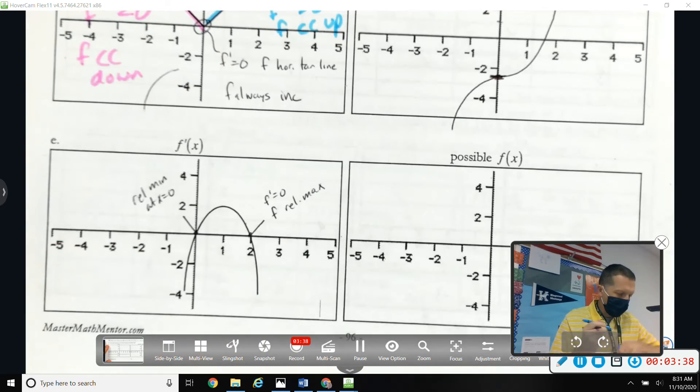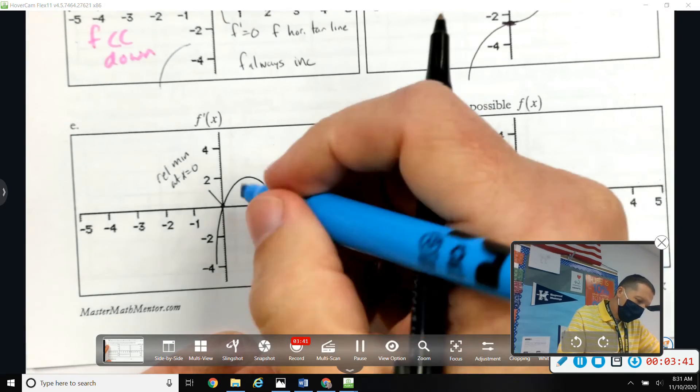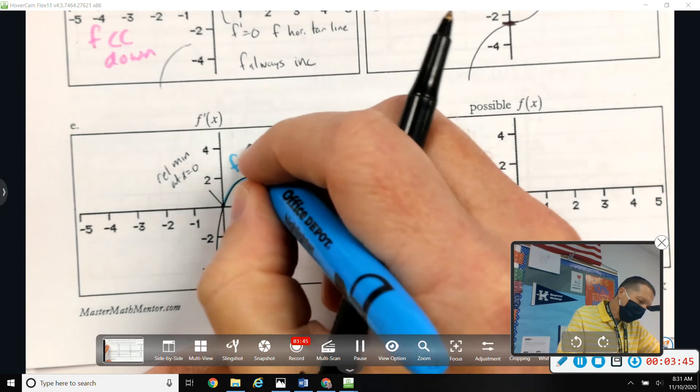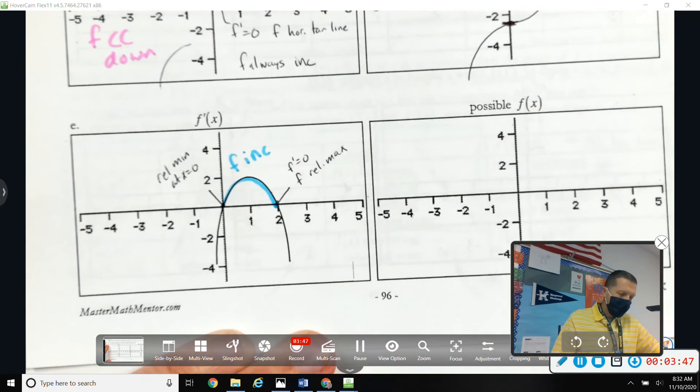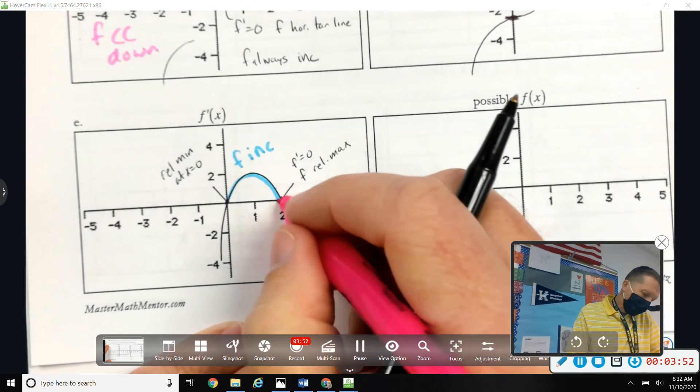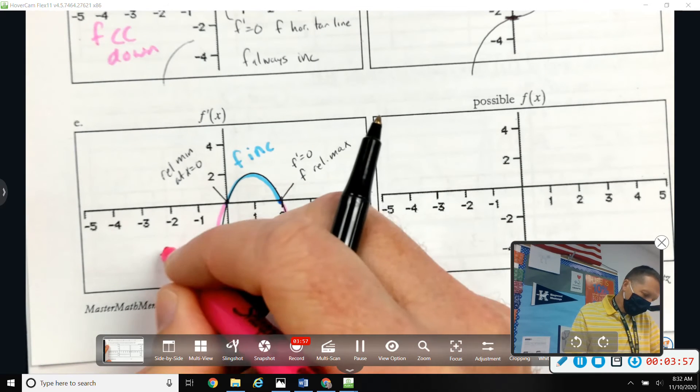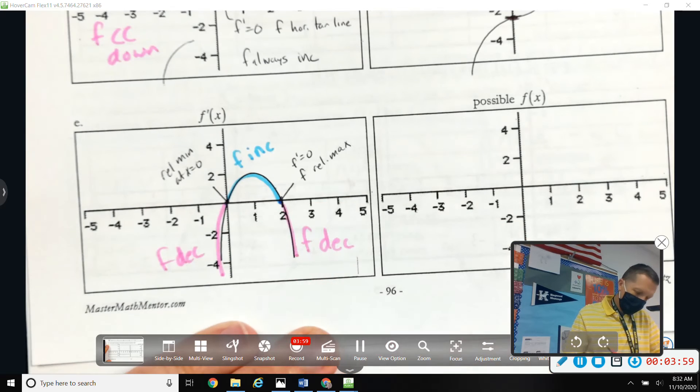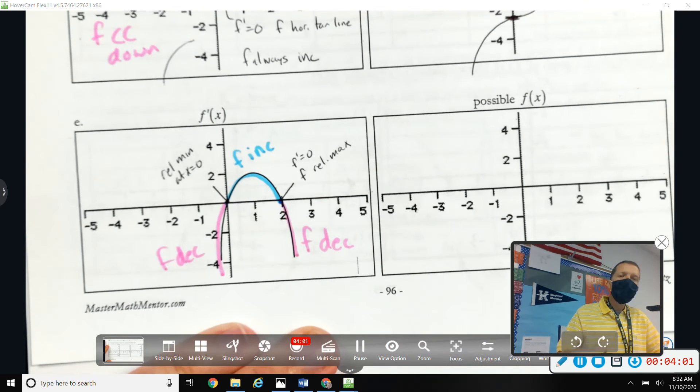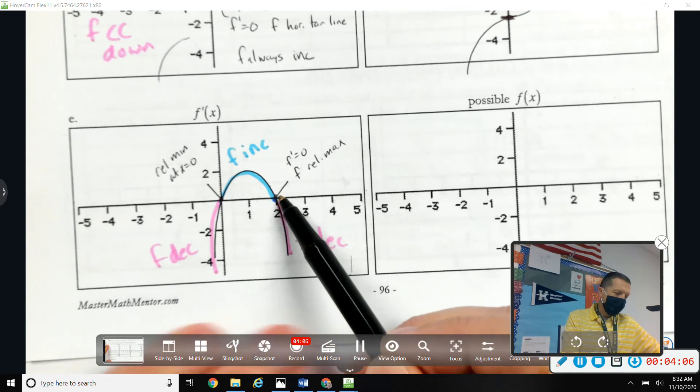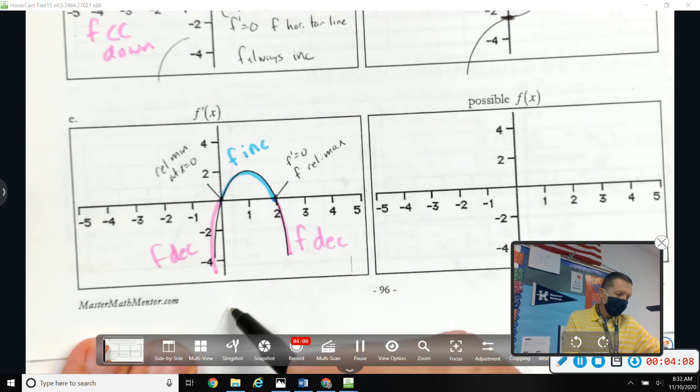And let's see, it increases. F prime is positive, so F increases from zero to two. F is decreasing from two on, and up to zero, F is decreasing. Okay, that fits with having a min and a max, though, right? So we're going to increase, and then decrease, and then increase.